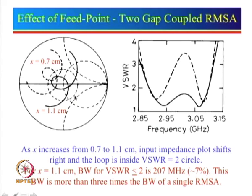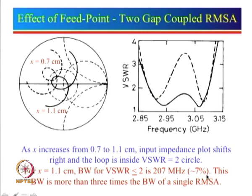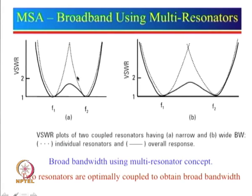Generally, the VSWR 2 circle is not shown on the Smith chart, but it can be plotted. In the Smith chart, this is 0, this will be 1, this is infinity, and somewhere here there will be 2. With that particular radius you draw the circle. The idea is to bring this loop within the VSWR 2 circle. If that is the case, we can see that the VSWR less than 2 bandwidth starts from this point to this point, giving us a bandwidth of about 207 MHz, which is about 7 percent — more than 3 times the bandwidth of a single RMSA.